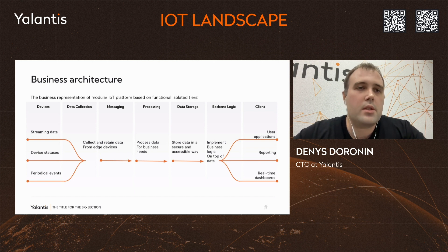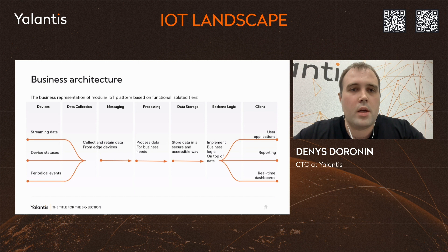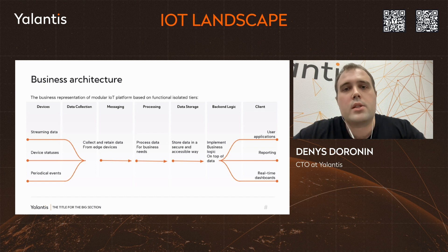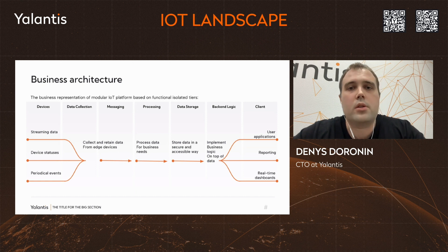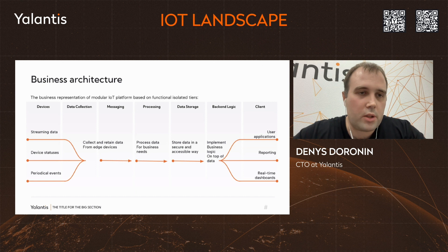Our platform starts with the data collection tier, acting as the entry point for data from devices. We collect the data and push it to the next tier called messaging, where we handle middleware — routing data, transforming data, and aggregating data. Then we send it to the processing tier where you can build different metrics, real-time metrics, or run historical queries over your data.